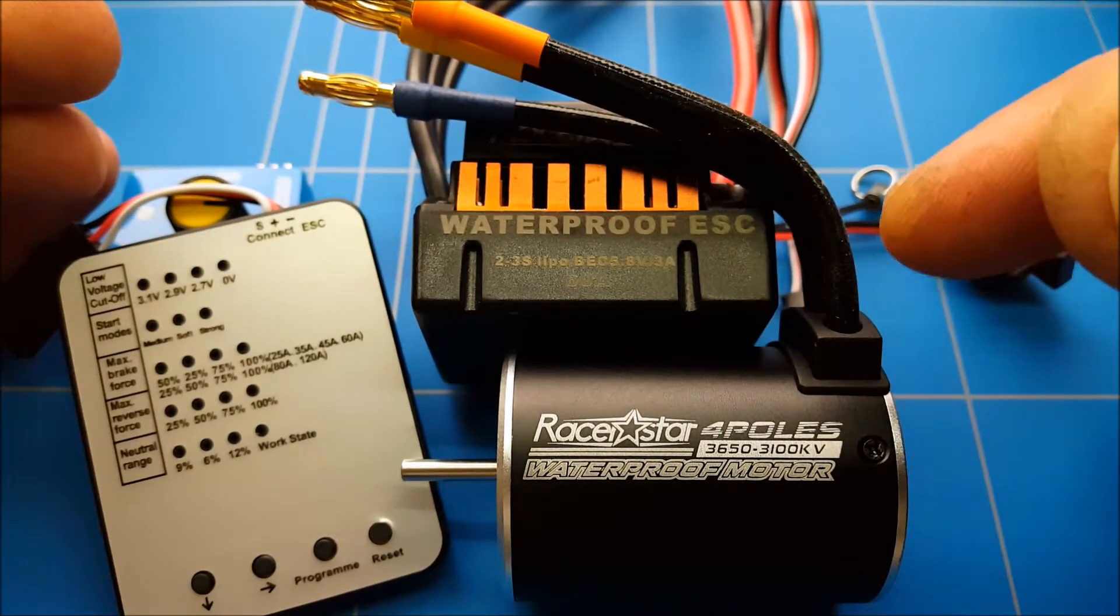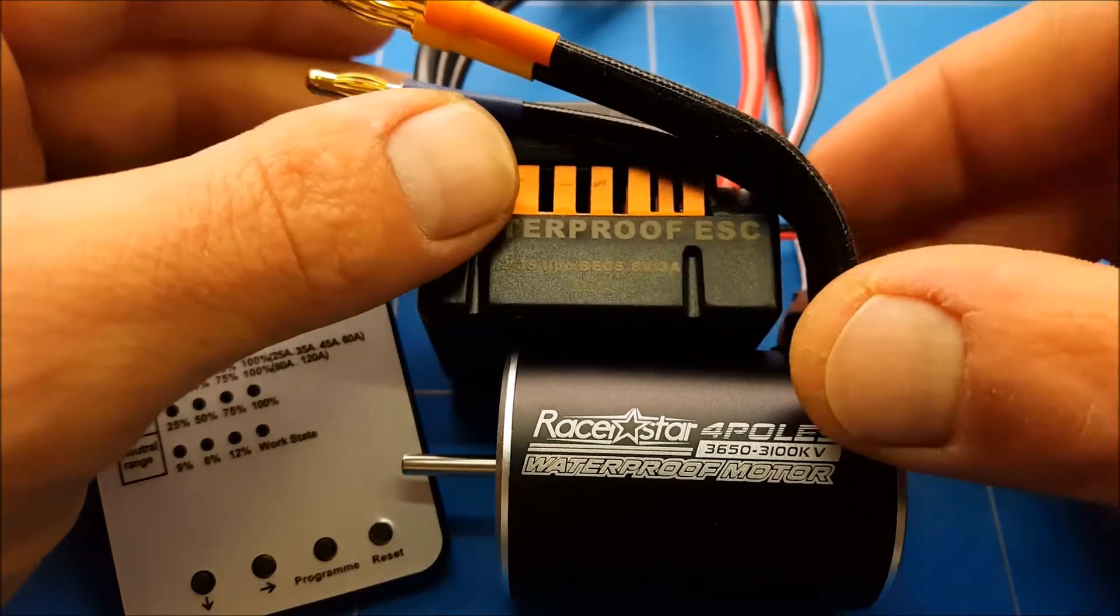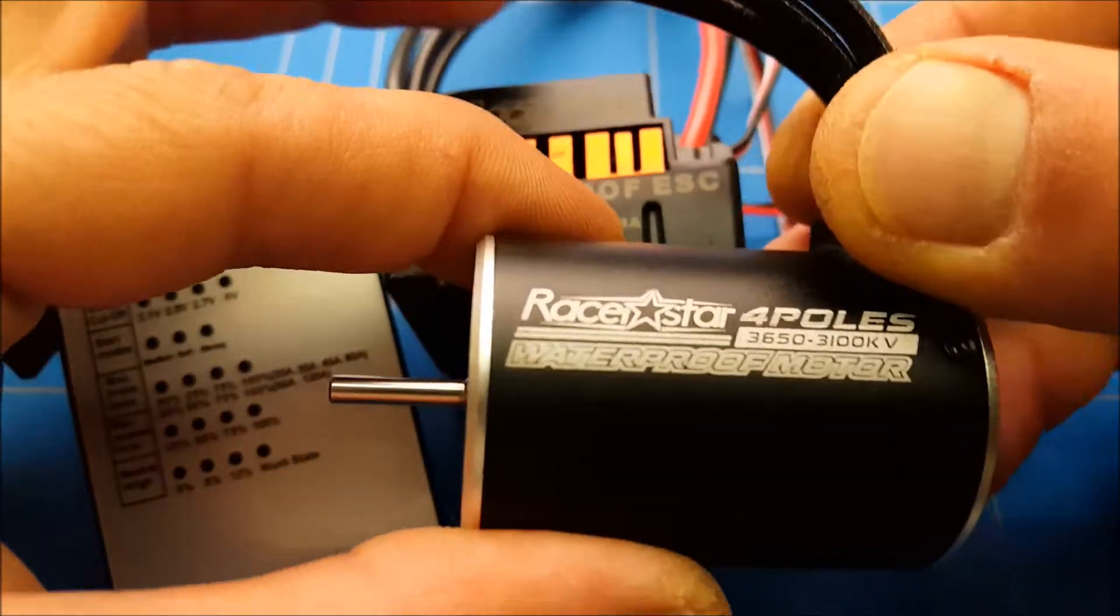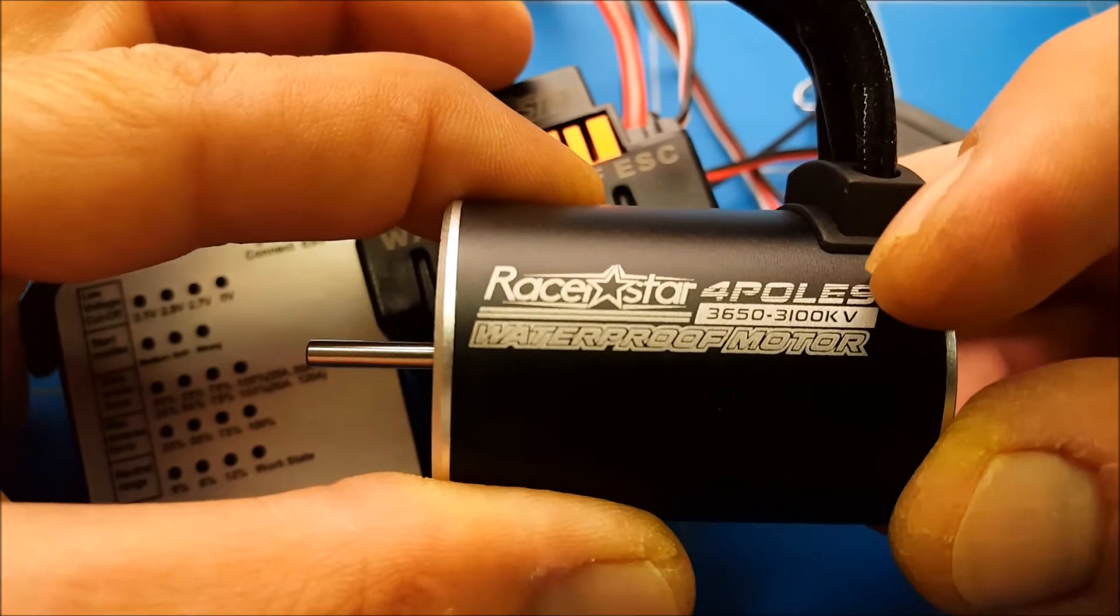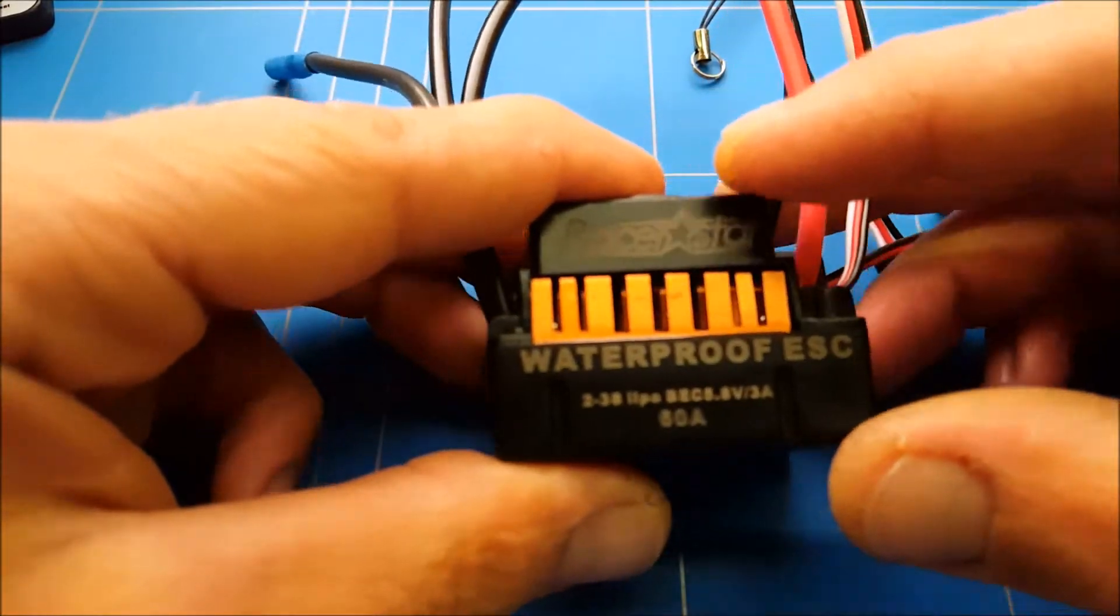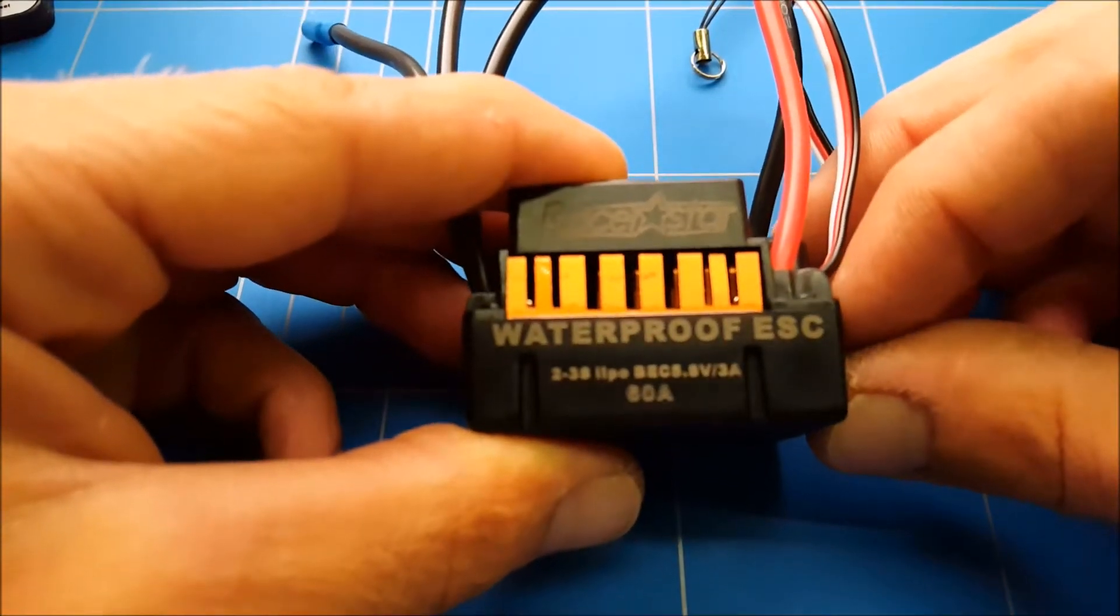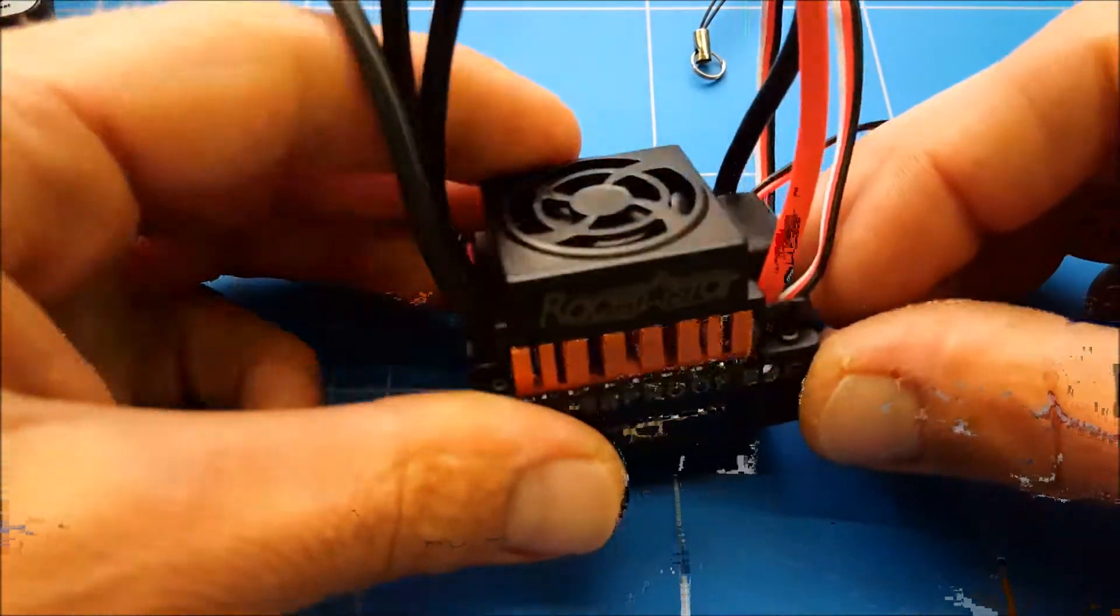This is the motor and brushless ESC that we're trying to use. This is a Raystar 4-pole motor, 3100 KV, and I'm going to be trying it out first on a 3-cell 60 amp true waterproof ESC.